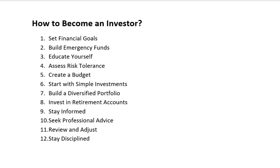Fourth is to assess risk tolerance: evaluate your tolerance levels for risk, taking into account both age and economic circumstances, as well as whether you can handle the ups and downs of market changes. Fifth is to create a budget: plan a budget to see exactly how much you earn and spend, so as to know the amount of money you might be able to save and invest. Sixth is to start with simple investments: choose a brokerage platform or investment account and begin with low-fee options like index funds or exchange traded funds.